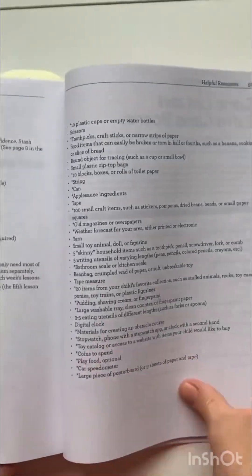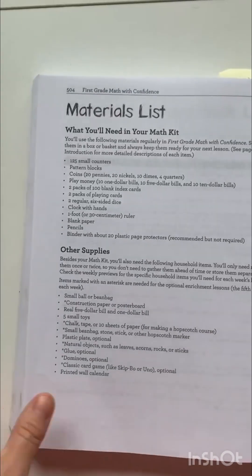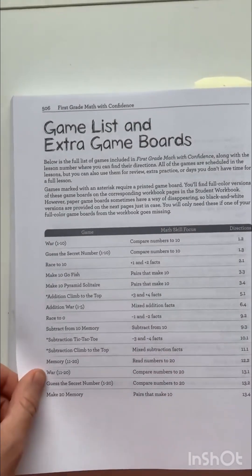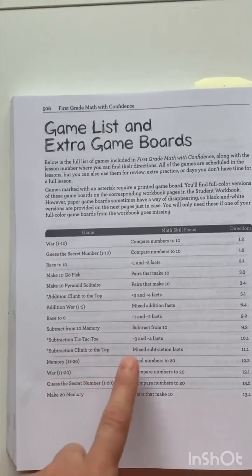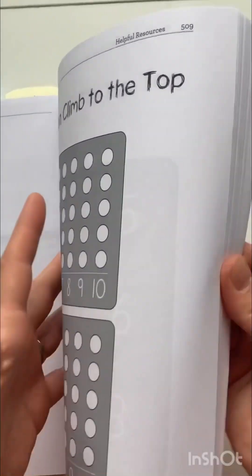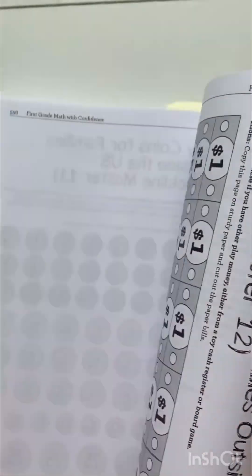Okay, and then you also have a materials list, game list, and extra board games. This is nice if you want to practice a certain skill and figure out what game is for that skill. There's a second page for that. And then finally, she has all the game boards and extra pieces and blacklines and stuff for you to use for your manipulatives.